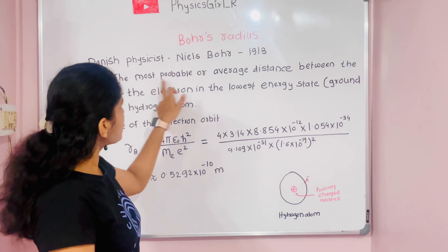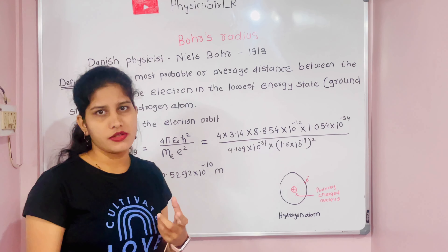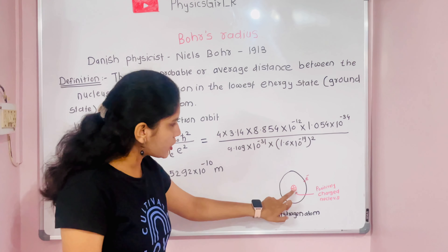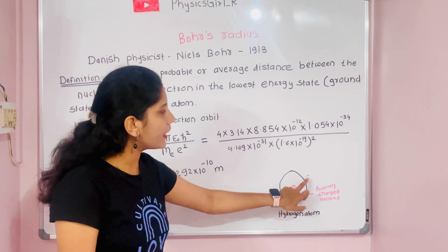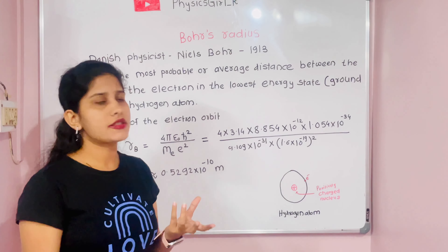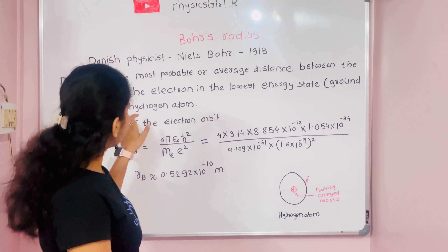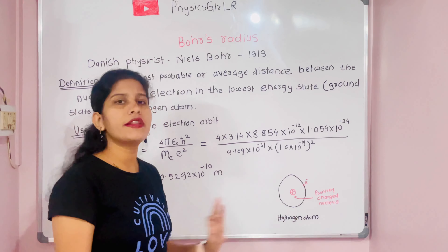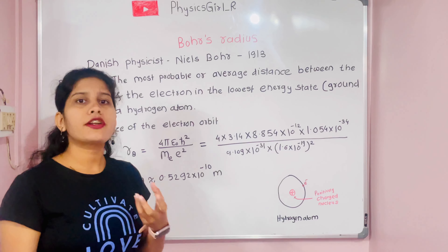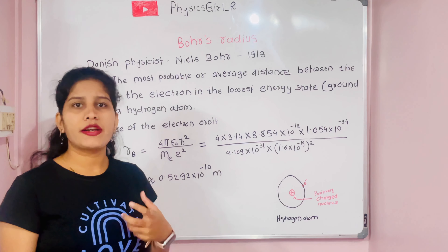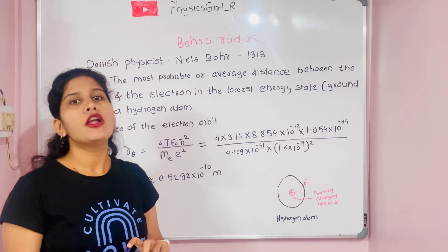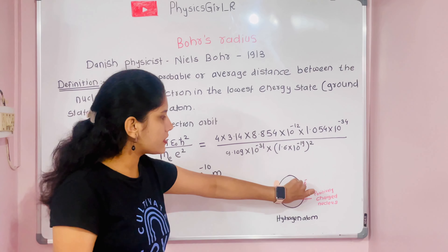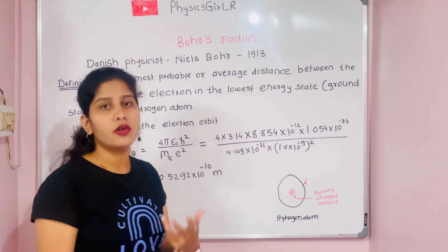So the Bohr radius is the most probable or average distance between this positively charged nucleus and the electron in the hydrogen atom, specifically when the hydrogen atom is in the ground state or lower energy state. This distance is known as the Bohr radius.